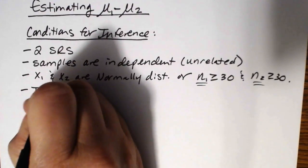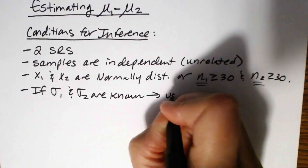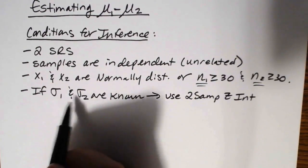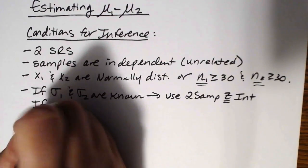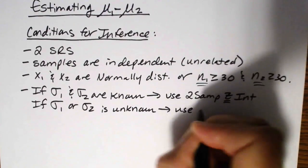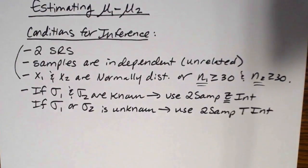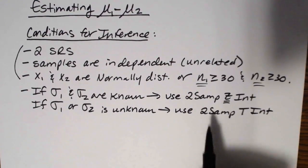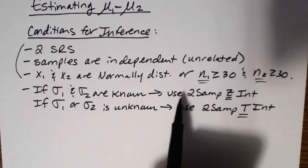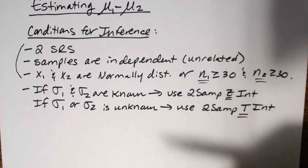If sigma1 and sigma2 are known — which almost never happens — then we use 2-samp Z int, since the population standard deviations are known. If sigma1 or sigma2 is unknown, then we use 2-samp T int. Whether or not we know the values for sigma determines which interval we use: 2-samp Z if sigmas are known, 2-samp T if at least one is unknown.